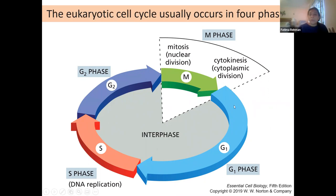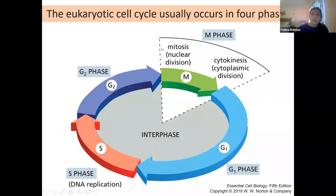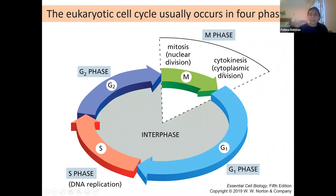The four phases are: G1 (Gap 1 phase), the S phase or synthesis phase where DNA is replicated to produce two complete sets, a second gap phase G2, and then actual division into two daughter cells through mitosis and cytokinesis.